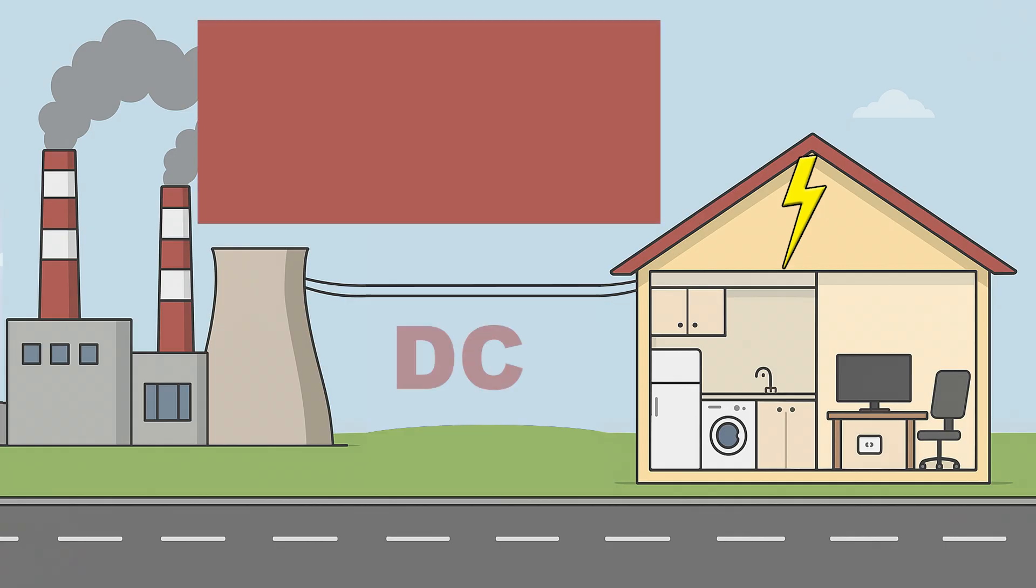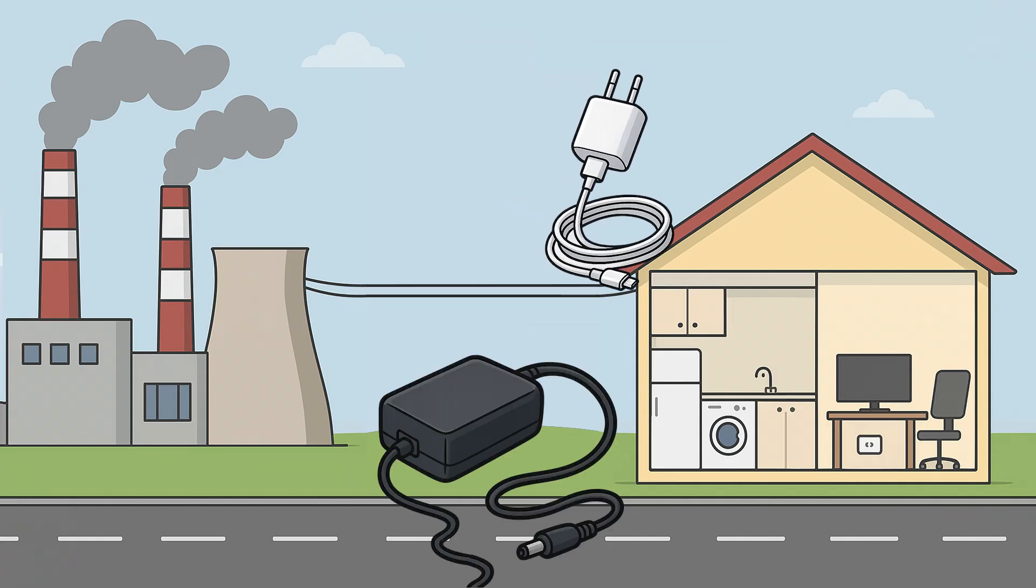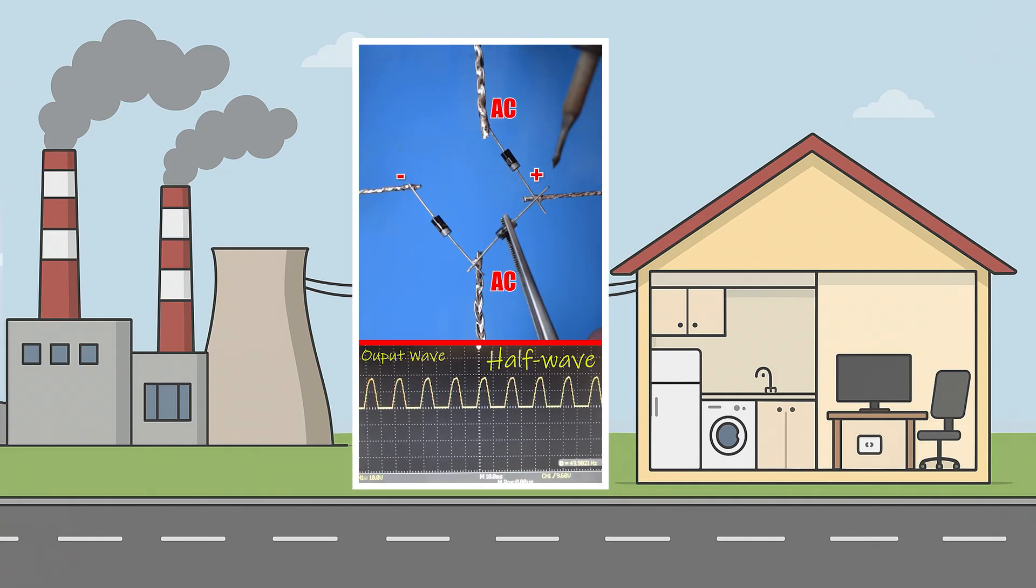Direct current, DC. This current always flows in one direction. Most devices like computers, phones, and TVs run on DC. We usually get DC from AC using converters, since our main source is the city's AC electricity. Converting AC to DC is simple and inexpensive, and you can see how it works in this video.